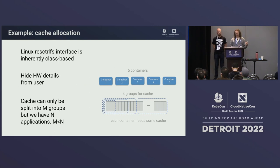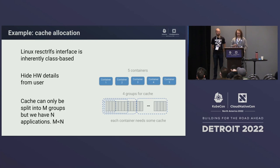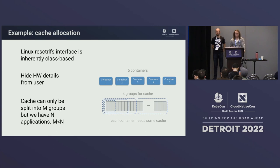We're going to go through three different resources to express with QoS class resources. The first is cache allocation. In Linux you can use the RDT resctrl FS interface under resctrl FS to specify cache allocation. This is already inherently class-based — there are named caches allocated to different processes. Ideally this hides hardware details from the user, since there are M groups of caches but N applications or pods that would actually fit into those caches.